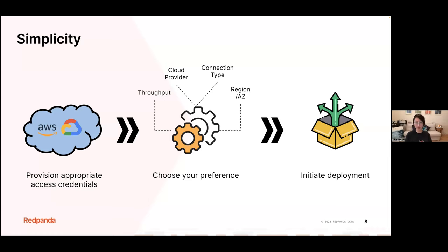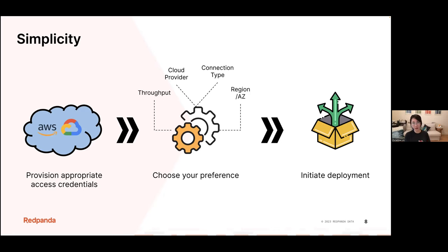First, they need to provision appropriate access credentials. They'll need to create credentials that allow creation of EKS clusters, setting up networks, storage, and all that infrastructure — detailed in our documentation. Importantly, these credentials are not shared with Red Panda. We don't keep them. The user creates them and keeps them in their own environment. Once that's set up, they just need to go into Red Panda Cloud and sign up for an account.